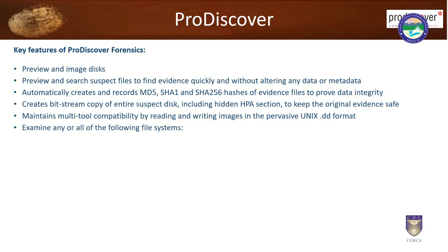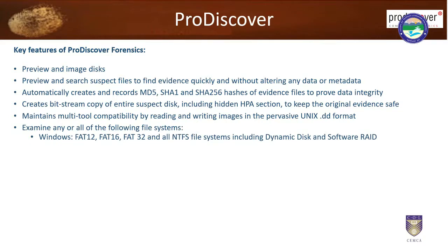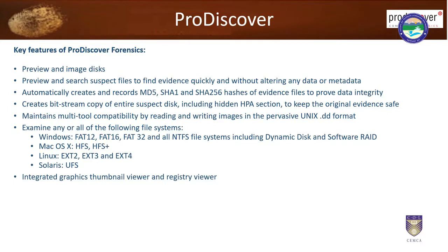Key features of ProDiscover: you can preview and look at disk images, preview and search suspect files to find evidence quickly without altering the original data or metadata. It automatically creates records — MD5, SHA-1, SHA-256 hashes of evidence files to prove data integrity. It creates a bit-stream copy of the entire suspect disk, including the HPA section, to keep the original evidence safe. It maintains multi-tool compatibility by reading and writing images in the UNIX DD format. It can examine file systems including Windows FAT12, FAT16, FAT32, NTFS, dynamic disks and software RAIDs, Mac HFS and HFS Plus, Linux EXT2, EXT3, EXT4, and Solaris UFS.